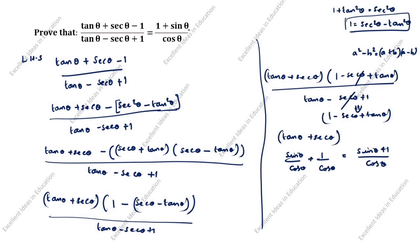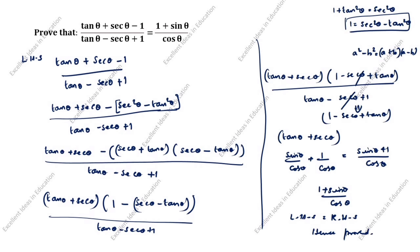You can see here what is RHS: 1 plus sin theta by cos theta. So we have changed LHS to 1 plus sin theta by cos theta. LHS equals RHS, hence proved. Thanks for watching this video.